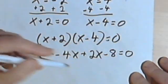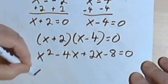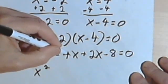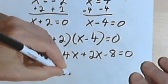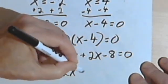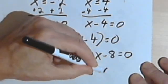And now I'll just combine the like terms that I have. So I'll end up with x squared, negative 4x plus 2x is negative 2x minus 8 equals 0.